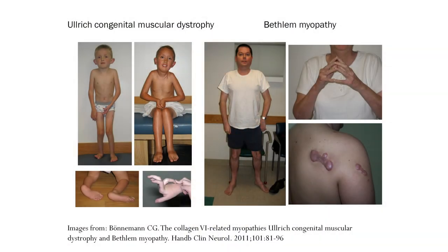The Collagen 6 Myopathies are among the most common congenital muscular dystrophies and are characterized by a combination of weakness with distal joint laxity and joint contractures. In the more severe phenotype, Ullrich congenital muscular dystrophy, symptoms onset in the early neonatal period and lead to respiratory insufficiency and loss of ambulation before age 12. In the milder form, Bethlem myopathy, symptoms onset in late childhood and early adolescence and ambulation is maintained well into adulthood.